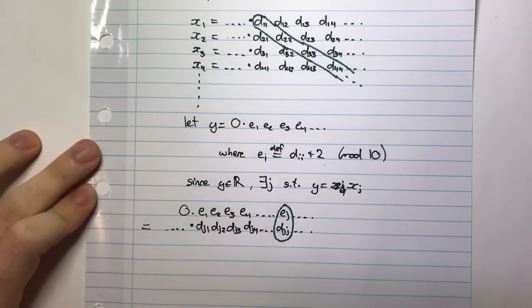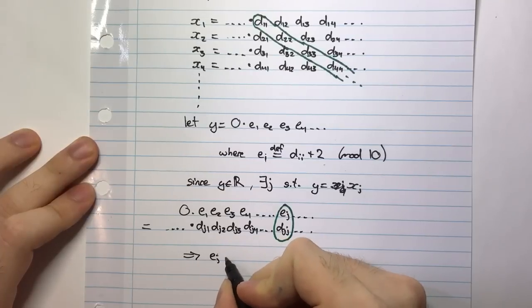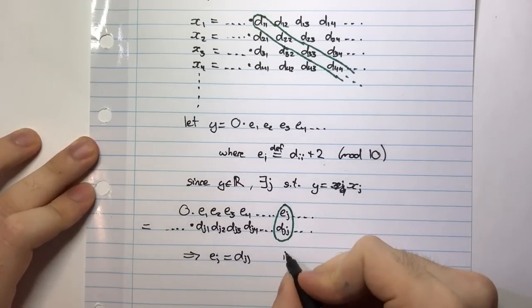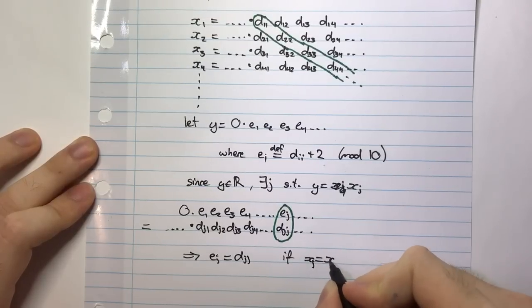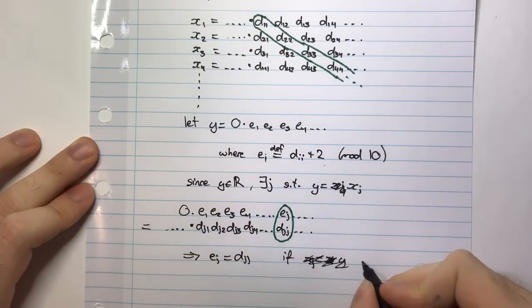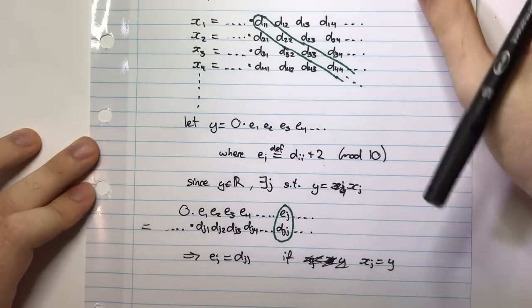So that means that EJ should be DJJ if XJ is equal to Y.